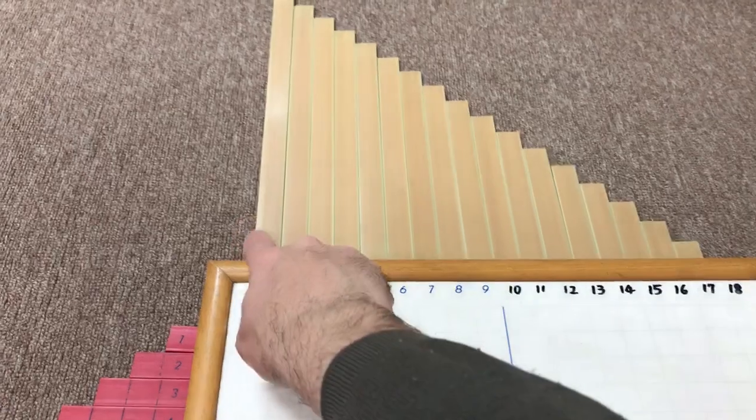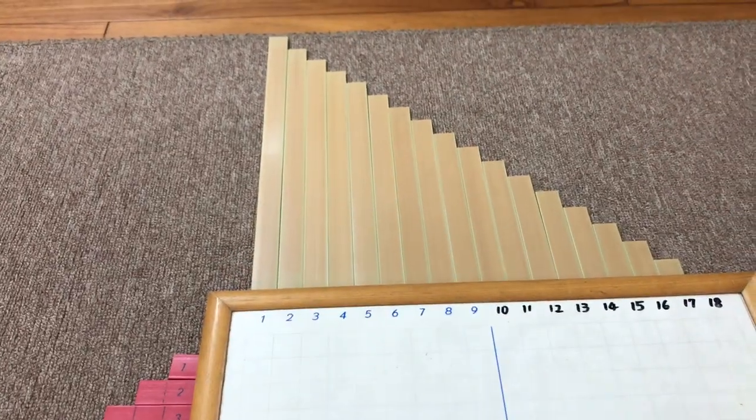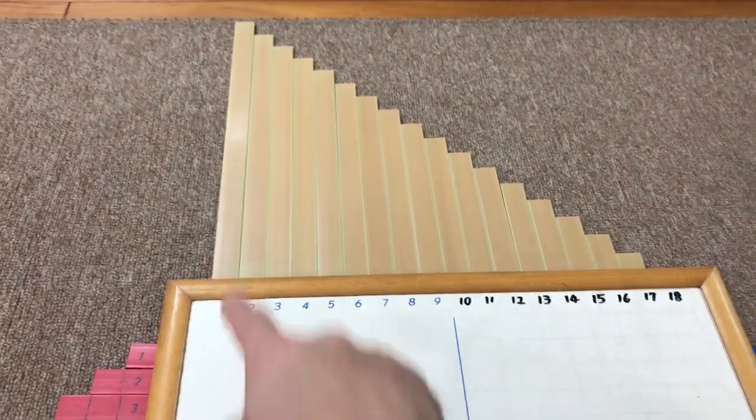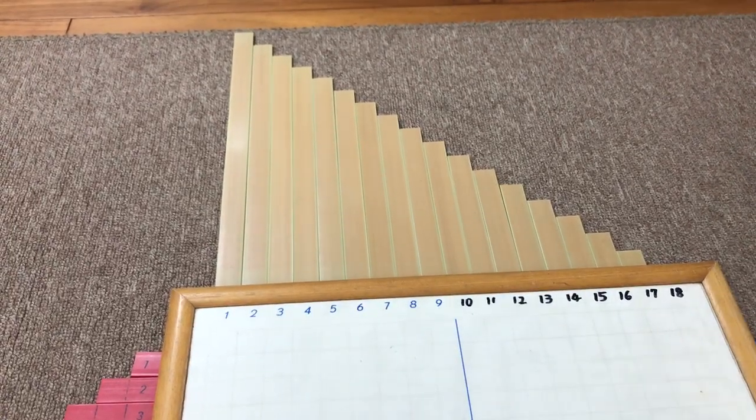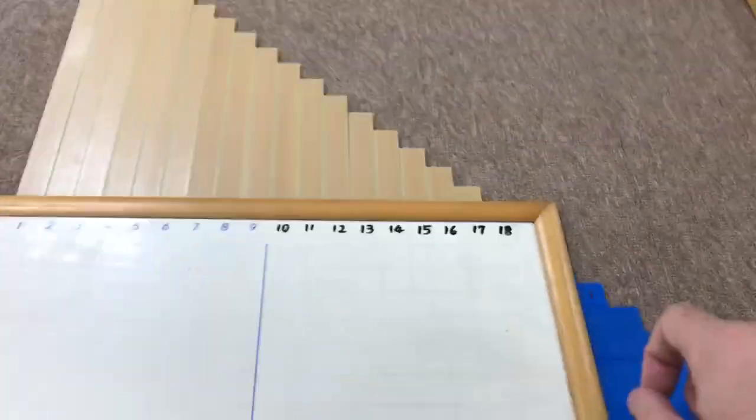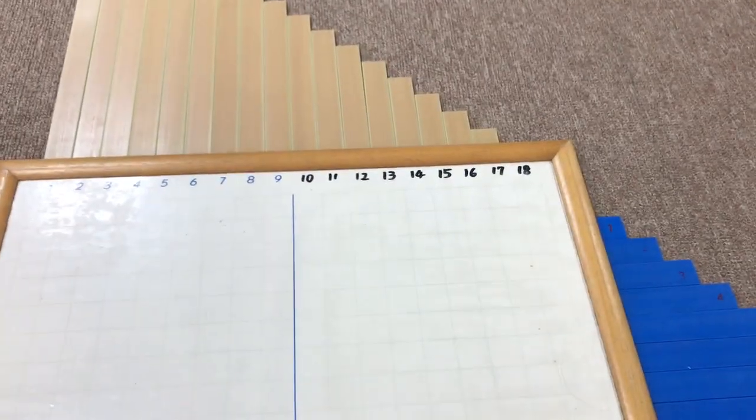But across the top I took the longest of the brown pieces and put it next to one, above one. Then the next longest goes above two, and then the next longest above three, all the way to 17. Notice that 18 has nothing above it.